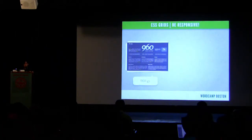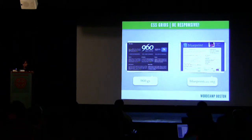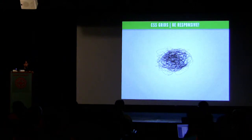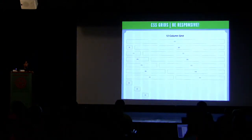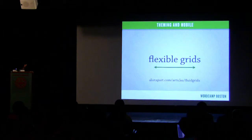In terms of grid systems, there have been many that people have used, like 960 and Blueprint. The 960 grid is based on a 960-pixel width, and this is great, but instead of pixels we need percentages. We need our content and our grid to be flexible. There's a great article on fluid grids on A List Apart that covers this.